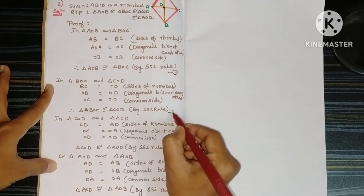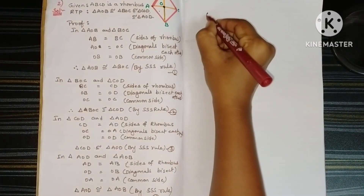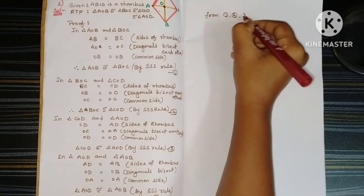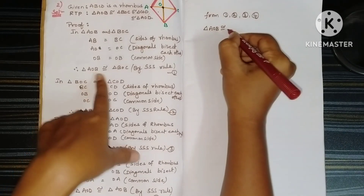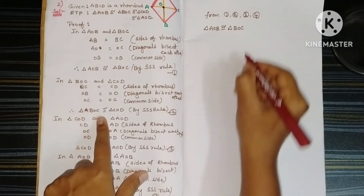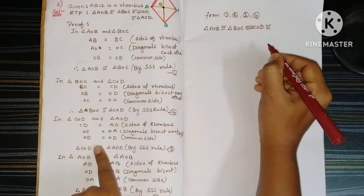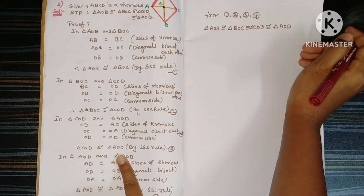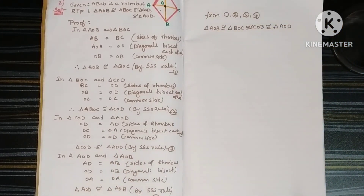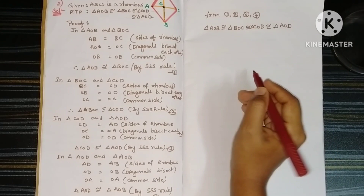Labelling these as 1, 2, 3, 4: from 1, 2, 3, 4 — triangle AOB is congruent to triangle BOC; triangle BOC is congruent to triangle COD; triangle COD is congruent to triangle AOD; and triangle AOD is congruent to triangle AOB, which is already proved. In this way, we can say the diagonals of the rhombus divide it into four congruent triangles.